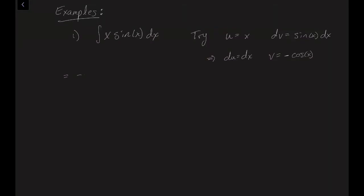Plugging into the formula, UV minus the integral of V dU gives us negative x cos(x) minus the integral of negative cos(x) dx, or rather negative x cos(x) plus the integral of cos(x) dx. The integral of cosine is sine, so we get negative x cos(x) plus sin(x) plus C, since it's an indefinite integral.